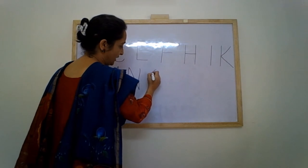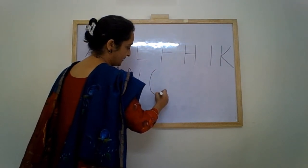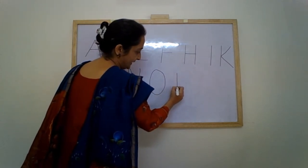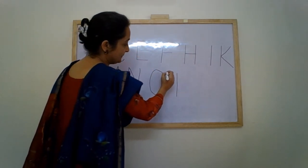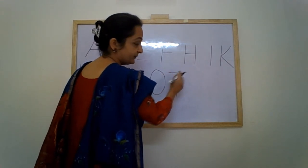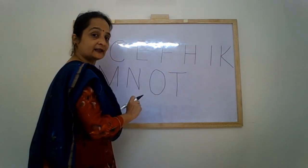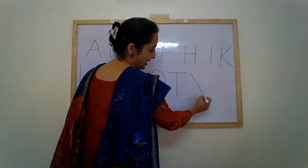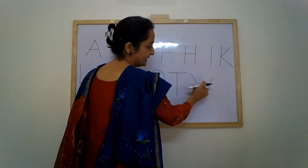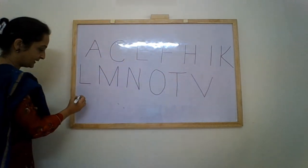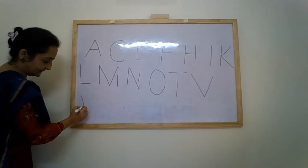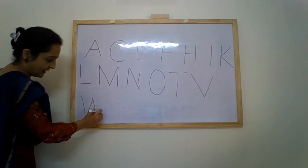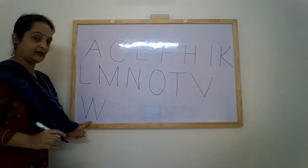A big oval — is letter O. Standing line with a sleeping line on top — is letter T. Slanting line down, stop and go up — is letter V. Slanting line down, go up, down, down, down — is letter W.